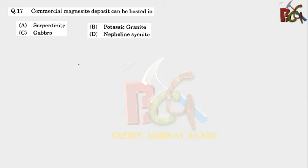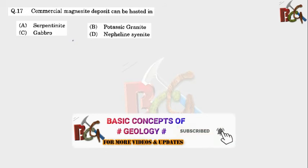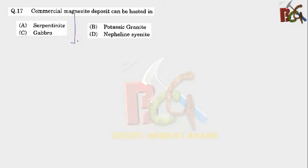Commercial magnesite deposit can be hosted in... Again this is an important and very logical question. What is the formula of magnesite? MgCO3. It means higher in Mg content and there must be a carbonate. Now look at the options: serpentinite, gabbro, potassium granite and nepheline syenite. So in these two options you will get lesser amount of Mg content. So these options can't be possible.